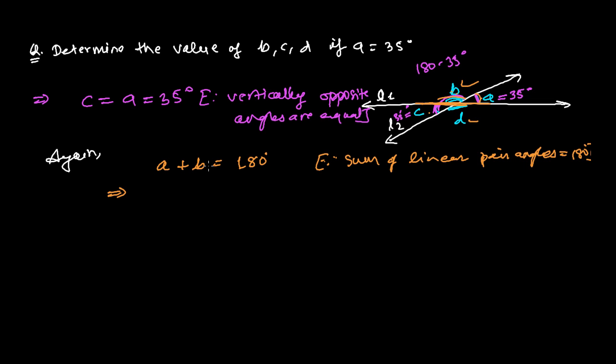Here we've already got the value of a, that is 35 degrees. So 35 degrees plus b equals 180 degrees. Then b equals 180 degrees minus 35 degrees, and if we subtract, we get 145 degrees.